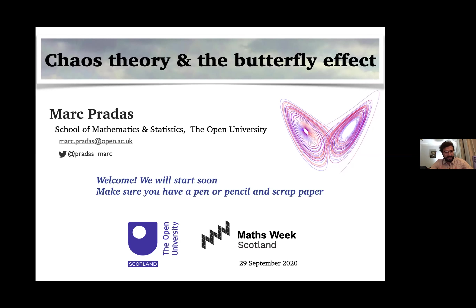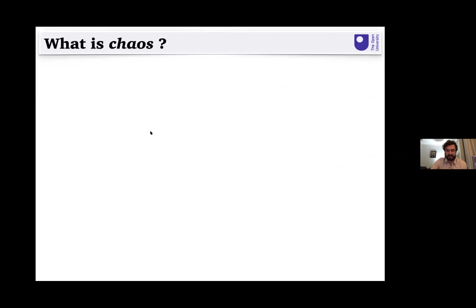I may ask you some questions during this session, and you might find it useful to have a pen or pencil and a piece of paper. The first thing I'm going to talk about is: let's try to define what is chaos. Chaos is a word we use very commonly in our vocabulary, particularly to describe situations that refer to complete disorder and confusion.